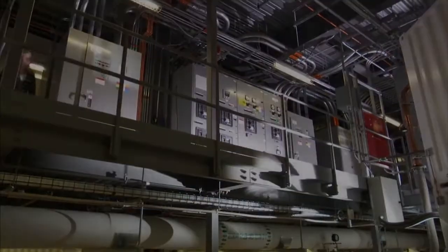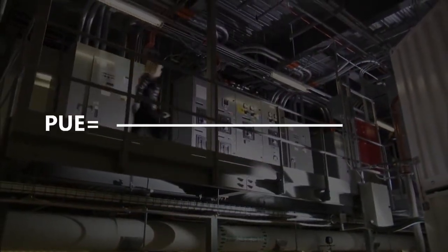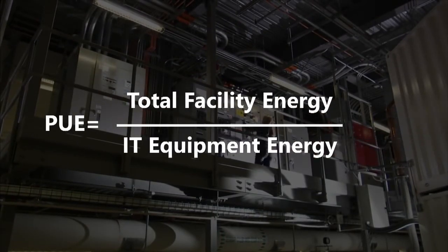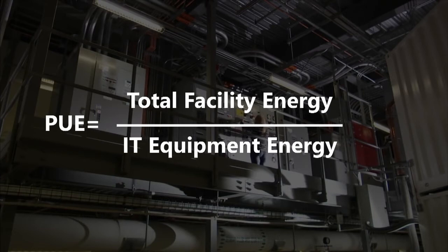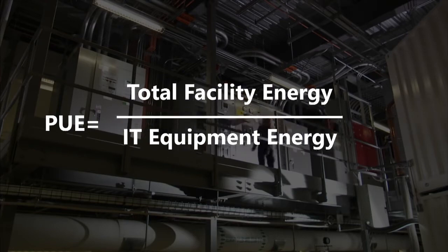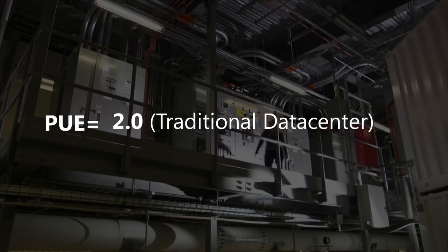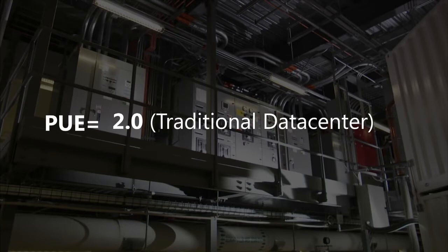Power usage effectiveness, or PUE, is the measure of total data center power consumption divided by IT, or critical power, and highlights how much power is consumed by supporting infrastructure versus the power to operate servers. A typical industry data center has a PUE of approximately 2.0, where the amount of energy consumed for the facilities and supporting infrastructure equals the energy to power the servers.